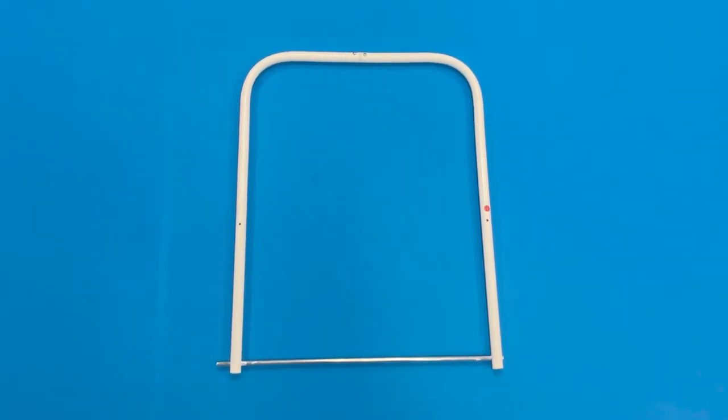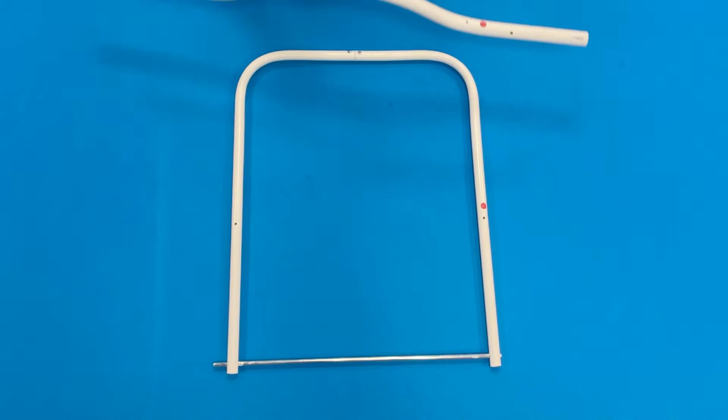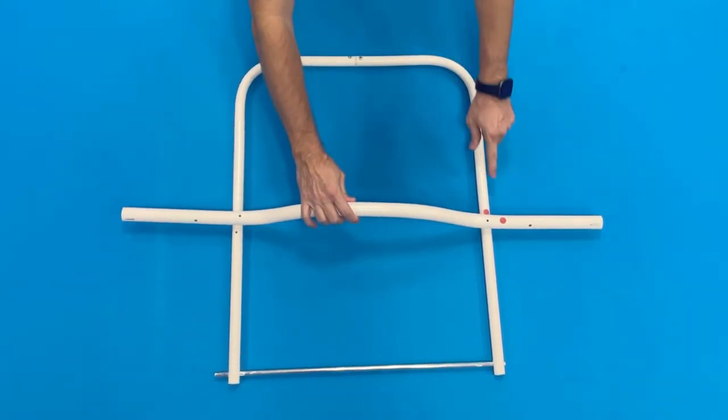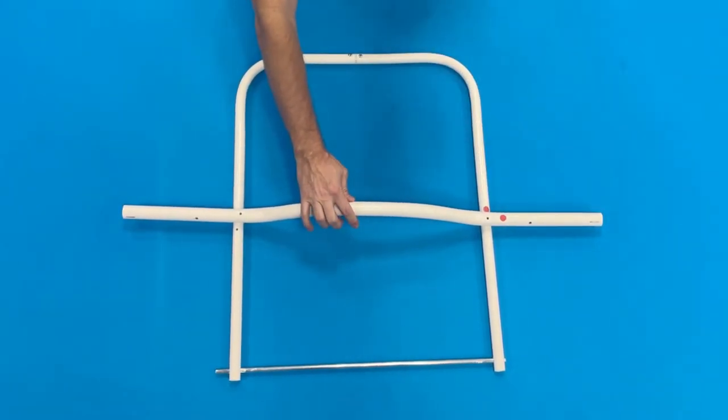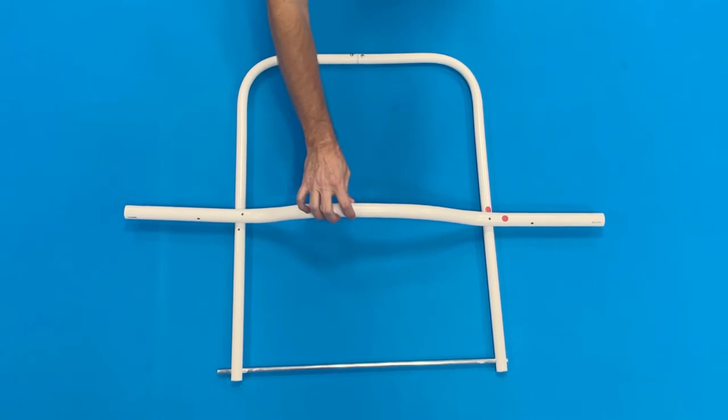Before attaching to the top of the back frame, make sure you attach the side of the crossbar with the red dot to the side of the back frame with the red dot and that they are both aligned on the same side.